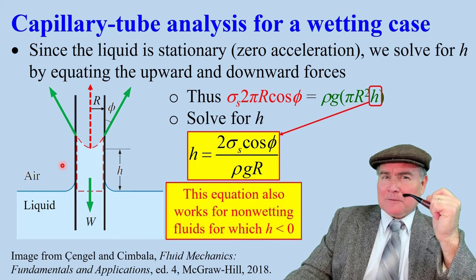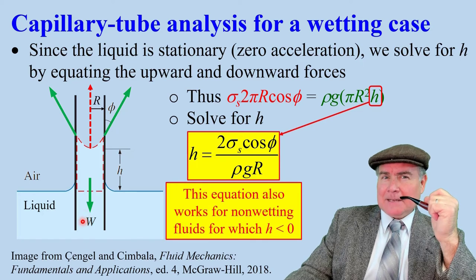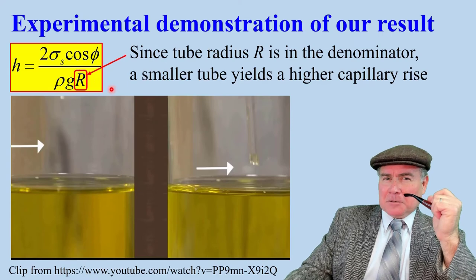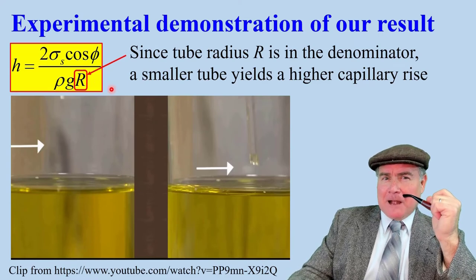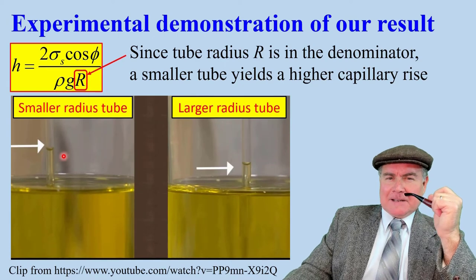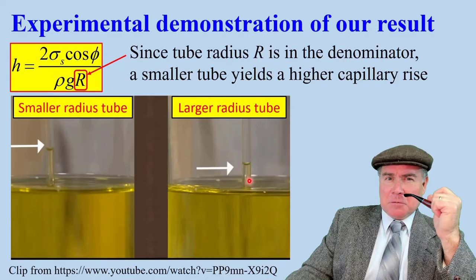We did this for a wetting fluid, but it also works for a non-wetting fluid. In that case, H would be negative. Let's demonstrate this equation experimentally. Since R is in the denominator, a smaller tube should yield a larger capillary rise for the same liquids. We see that this is true. The rise height is larger in the smaller diameter tube compared to the larger diameter tube. Does that answer your question? Yes, sir. The diagrams with the force vectors really help me understand all this.